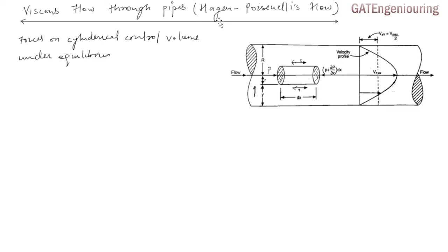Hi, this is Vipin. In this video I am going to discuss viscous flows through pipes, in which we will be discussing the velocity profile, maximum velocity, average velocity, volume flow rate, and the shear stress distribution inside a pipe.